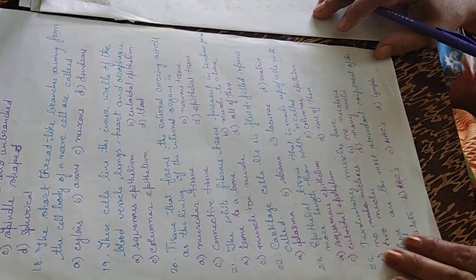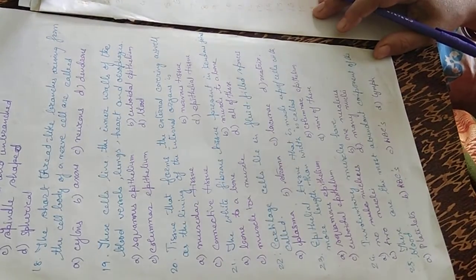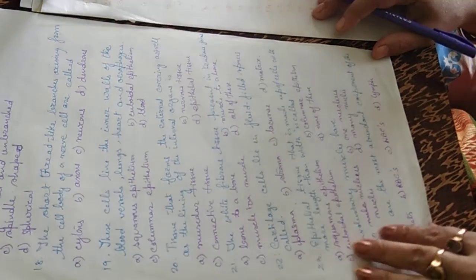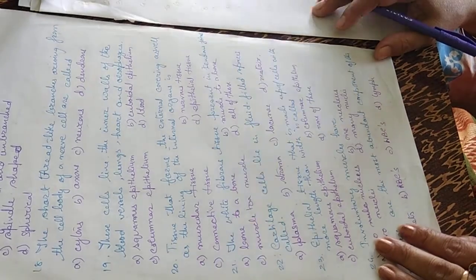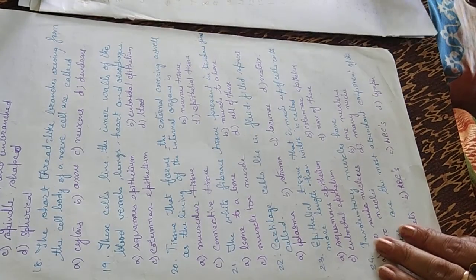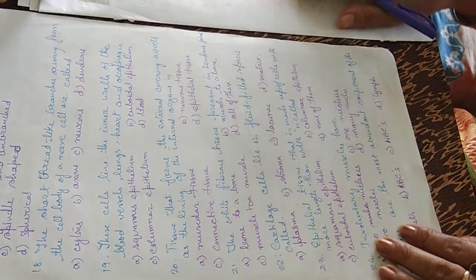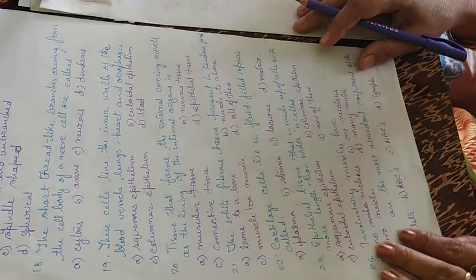Twenty-first question: the white fibrous tissue present in tendons — options are bone to bone, muscle to bone, muscle to muscle, and all of these. The twenty-first answer is B — muscle to bone.